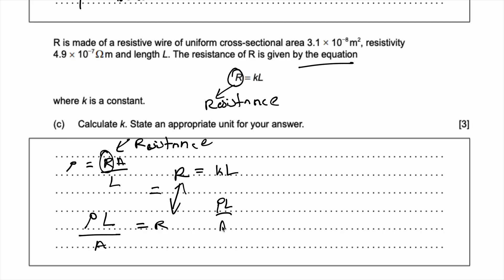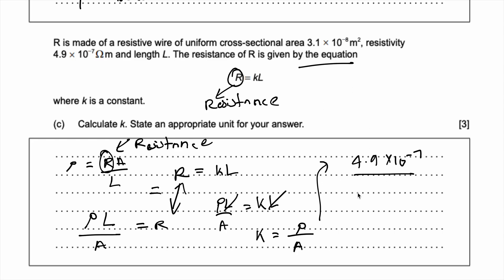Now we know the resistivity is 4.9 × 10⁻⁷ and the cross-sectional area is 3.1 × 10⁻⁸. Putting this in the calculator: 4.9 × 10⁻⁷ divided by 3.1 × 10⁻⁸ gives k = 15.8.